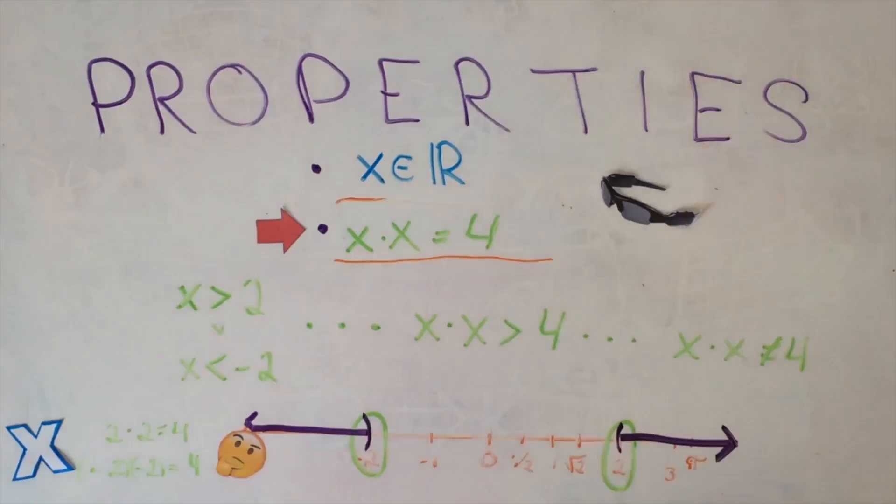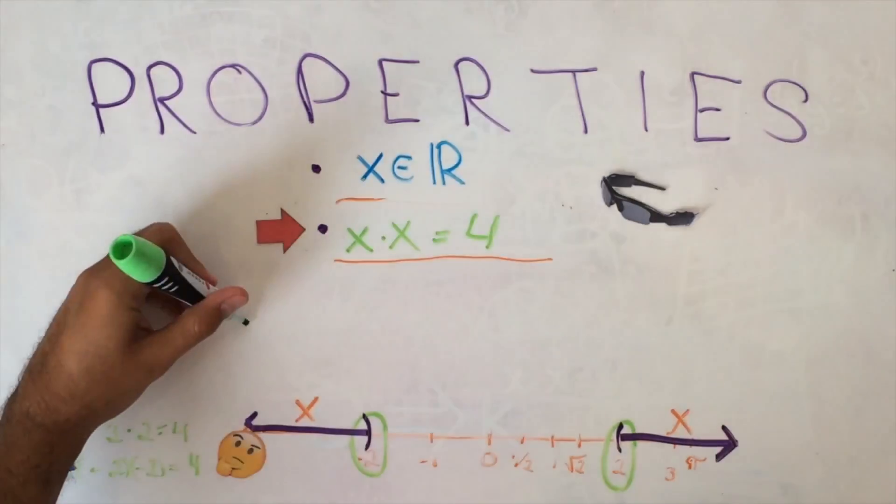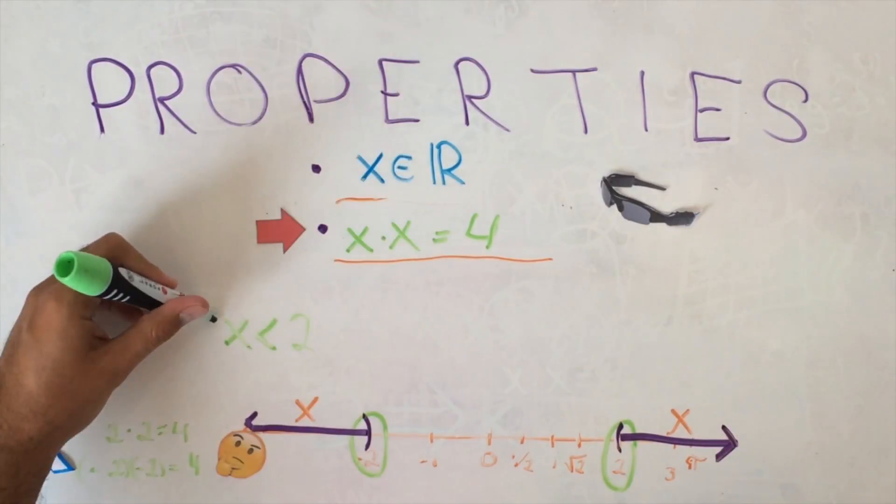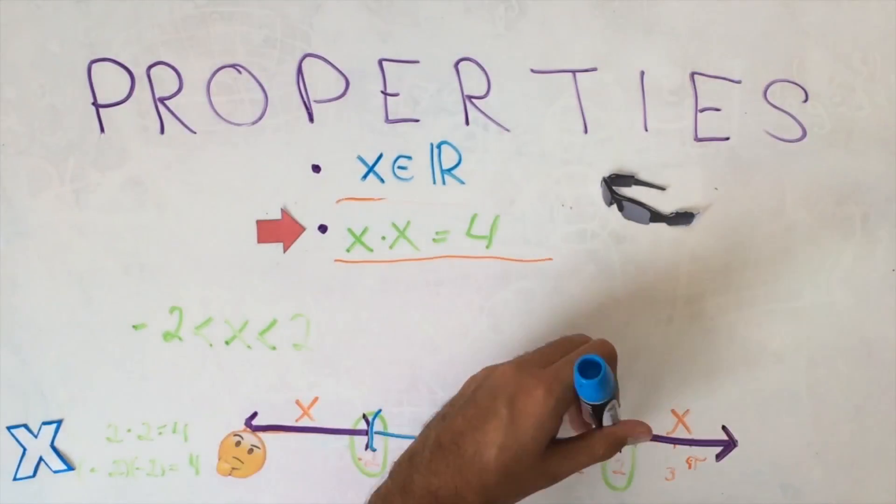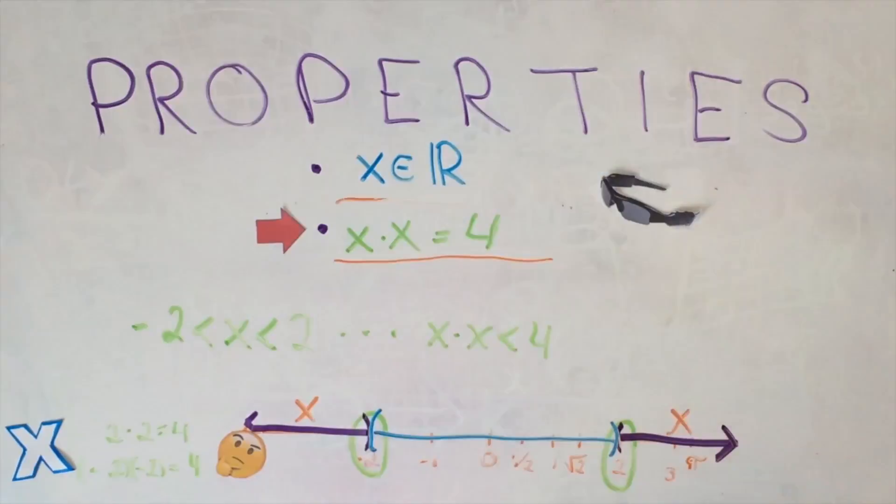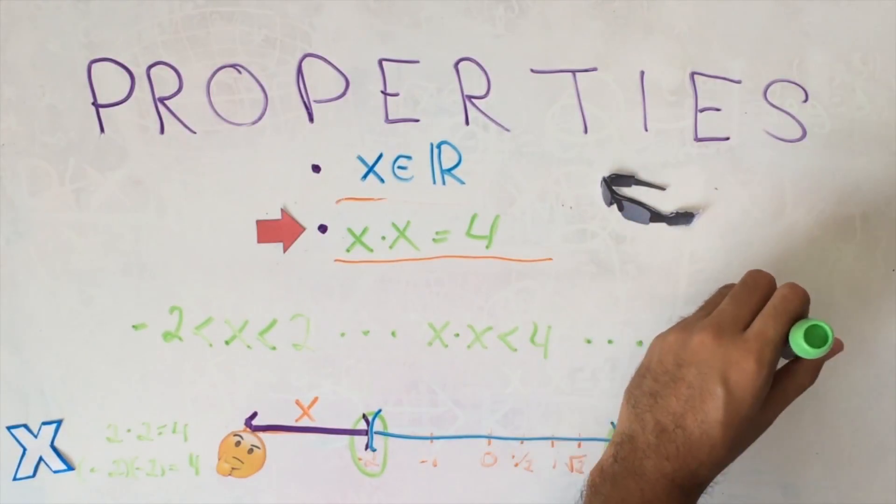That is, distinct from 4. On the other hand, if X were greater than minus 2 and lesser than 2, X times X would be less than 4, which is not the same as equal to 4.